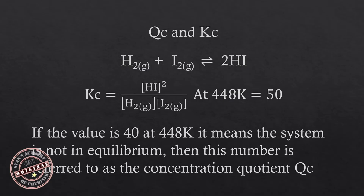If the value of the ratio of products to reactants happens to be 40 at the same temperature, it means that the system is not at equilibrium, and this number is referred to as the concentration quotient Qc. So every time we talk about concentration quotient, it's with reference to the equilibrium constant expression — the concentration of products to reactants — and if the value differs from the equilibrium constant, we call it the concentration quotient.